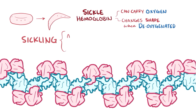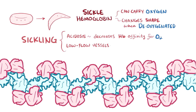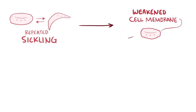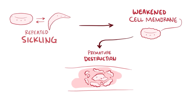Conditions favorable for sickling include acidosis, which decreases hemoglobin's affinity for oxygen, and small, low-flow vessels where red blood cells' hemoglobin molecules have plenty of time to dump lots of oxygen molecules. Repeated sickling of red blood cells damages their cell membranes and promotes premature destruction. Since this happens within the vasculature, it's called intravascular hemolysis.